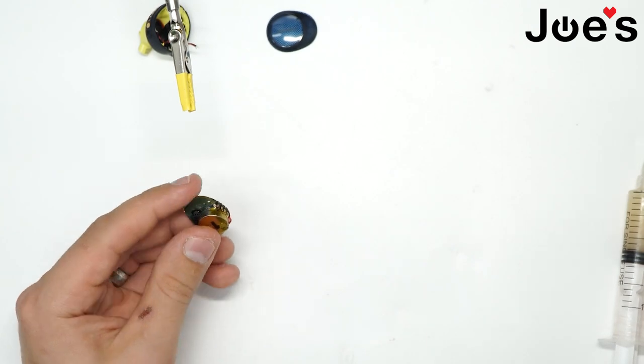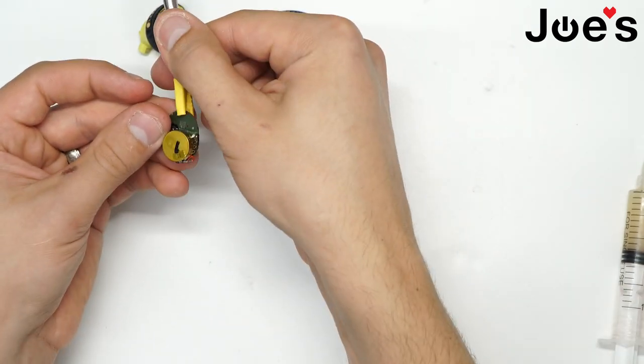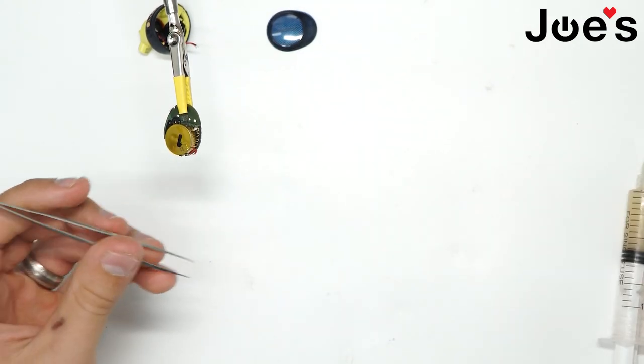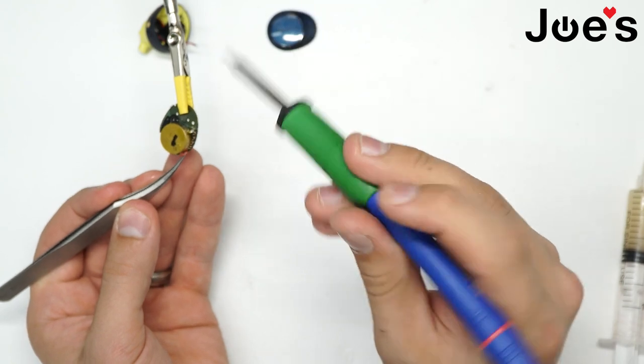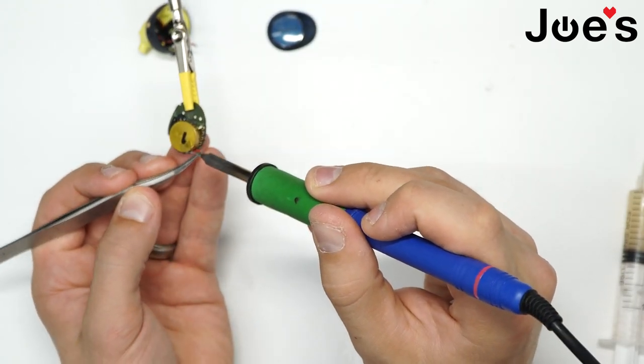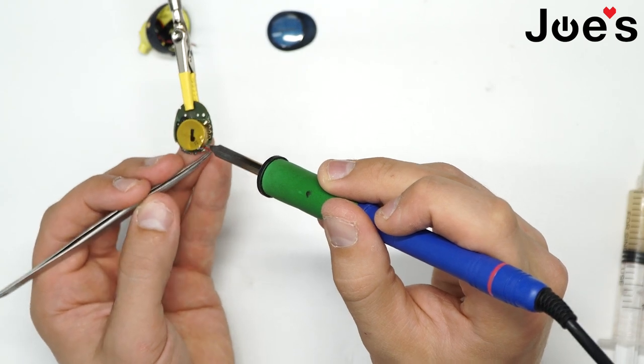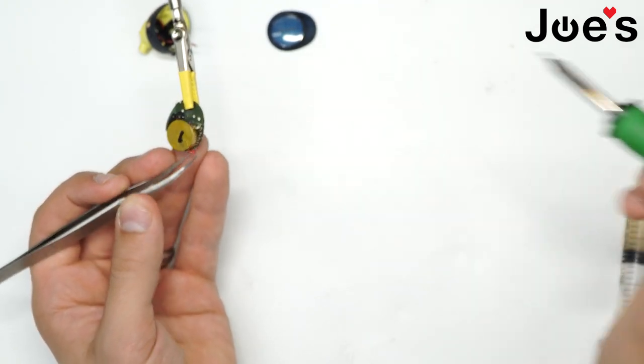So first I just go ahead and start off and solder the bottom piece on first. All right, that's soldered on. Go ahead and solder on the positive side. Alligator clips.